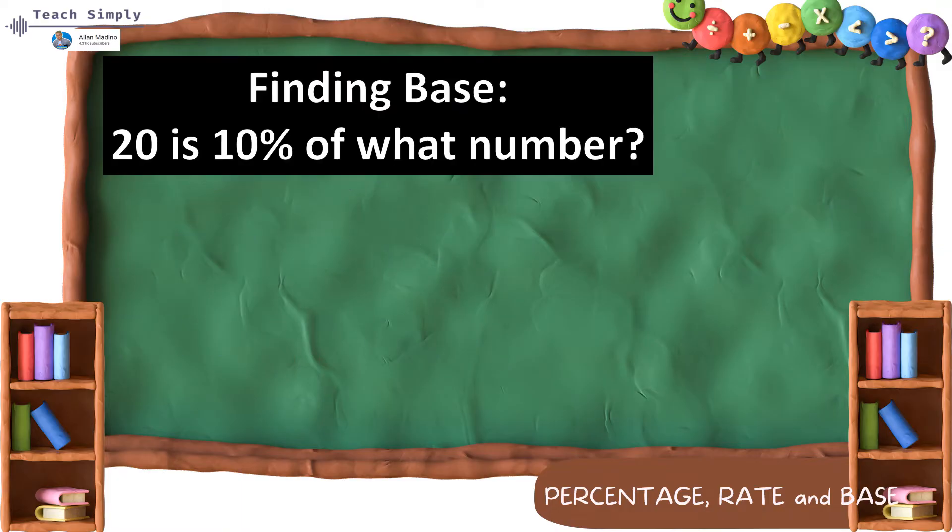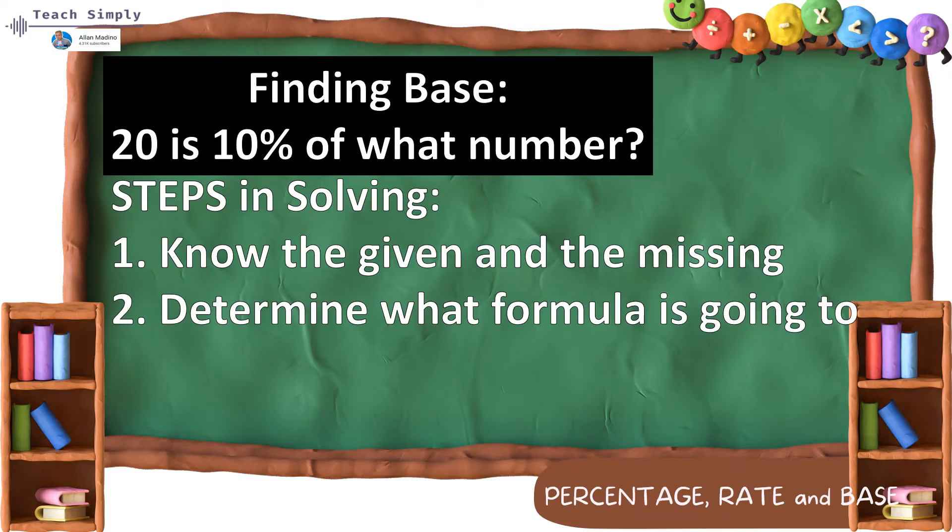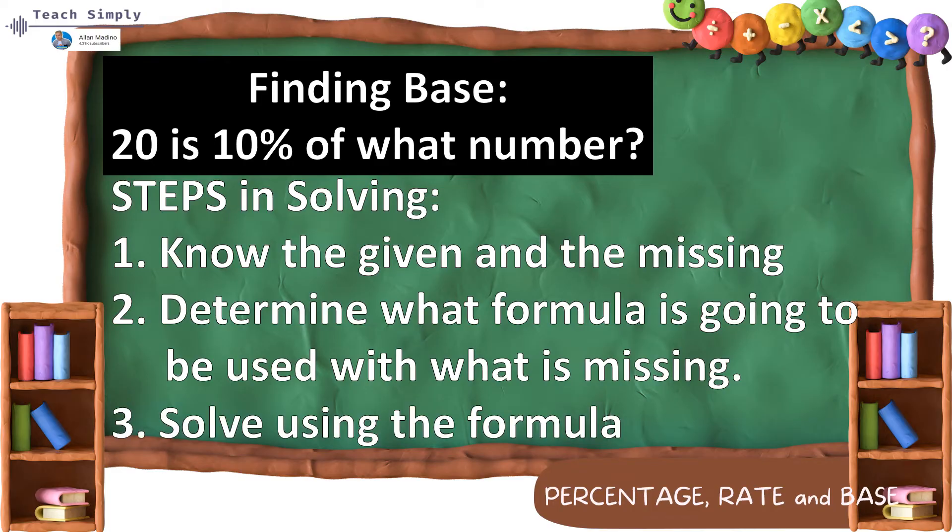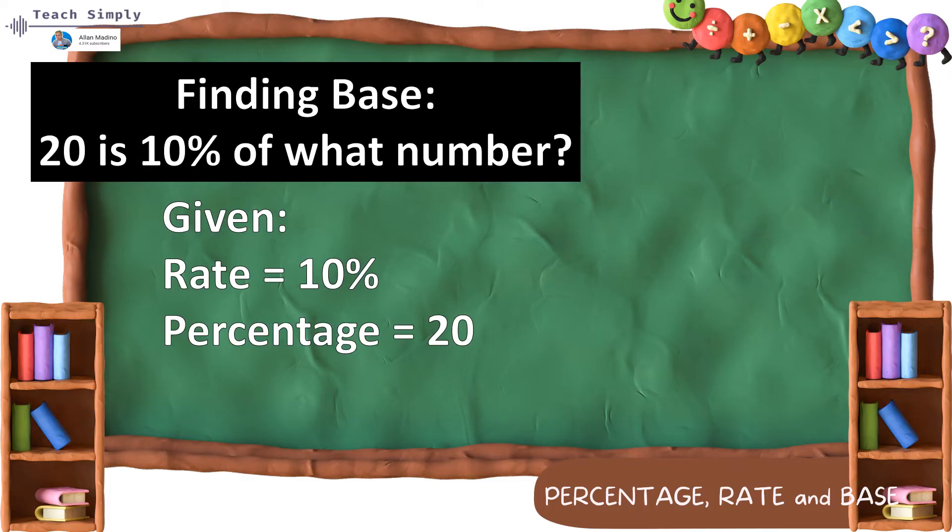With the same steps, we are going to find the base for this problem. 20 is 10% of what number? So, pareho pa rin ang steps. First, dapat alam natin kung ano yung given at ano yung missing. Number 2, we have to determine what formula is going to be used with what is missing. And number 3, isusolve natin ang formula. For this problem, 20 is 10% of what number? So, ito yung mga given natin. Ang rate natin or yung may percentage sign ay 10. So, automatically, our rate is 10%. Ang percentage natin is 20. And then, our base is missing.